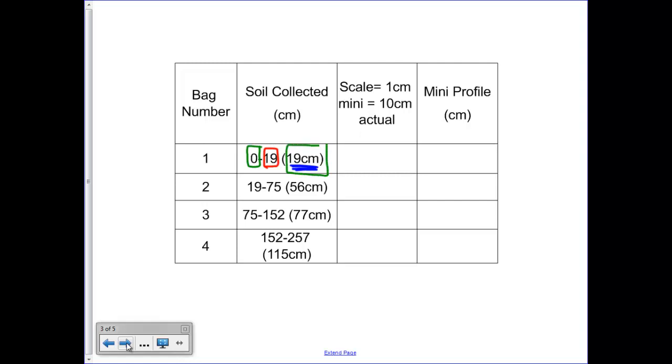Take the amount of soil in centimeters in each bag, divide that number by 10 to calculate how many centimeters of soil will be represented by our model. 77 divided by 10 equals 7.7 centimeters on the model. 115 centimeters divided by 10 equals 11.5 centimeters.